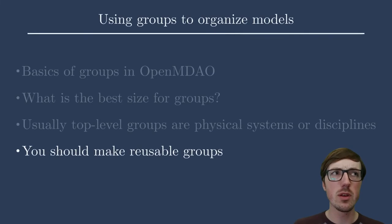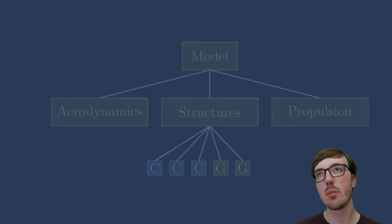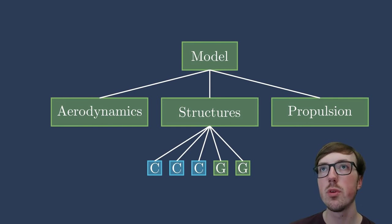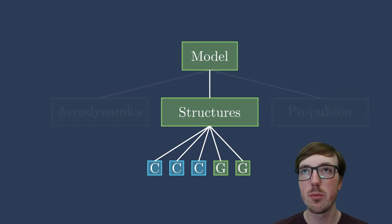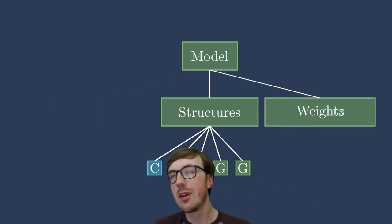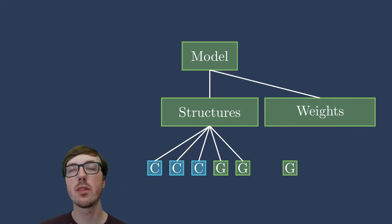Now, another tip I have here, and it's again a guideline, but it's going to help you, is making reusable groups. When I say reusable groups, I mean something that you can take from one model, one analysis, one optimization, and use it in another. Here is an example, and it's one where there's a group below the structural level. This is some subgroup. Maybe it's computing the mass of the wing or something like that, and we can use it in another section of the model.